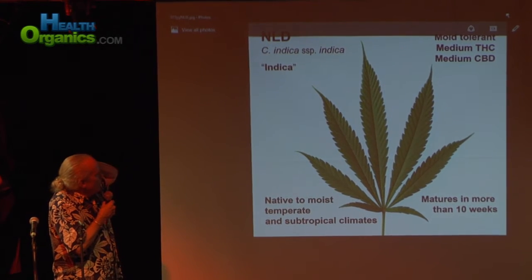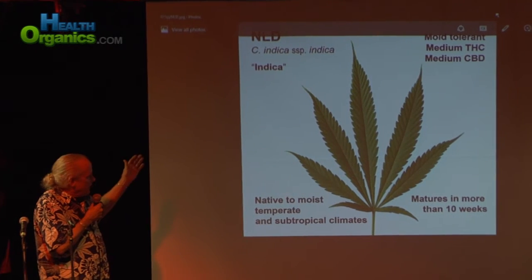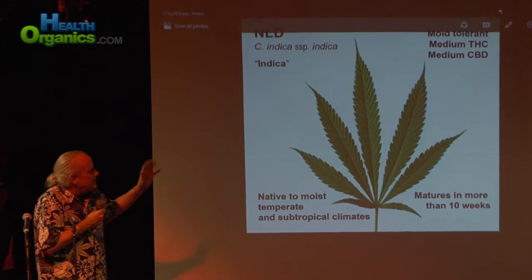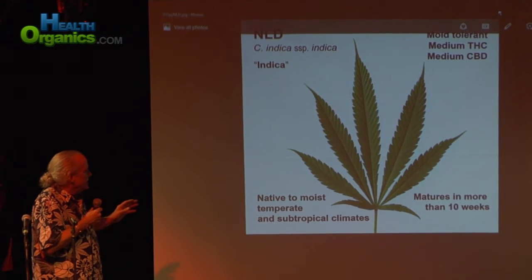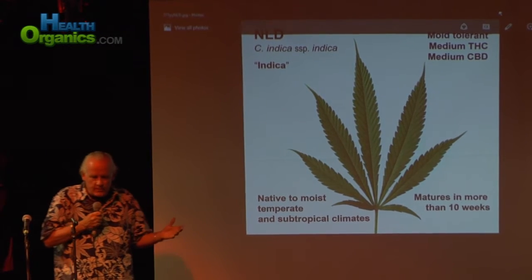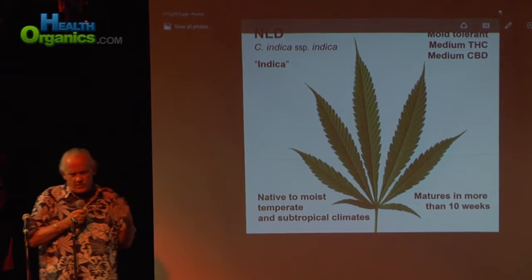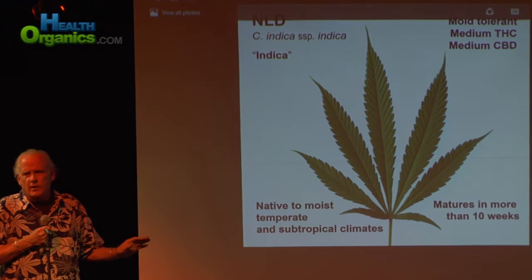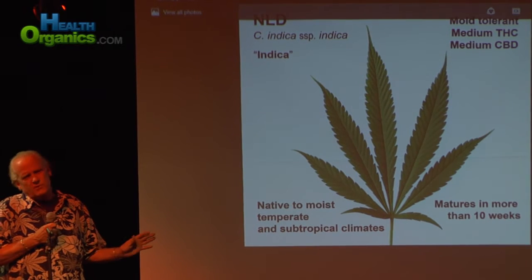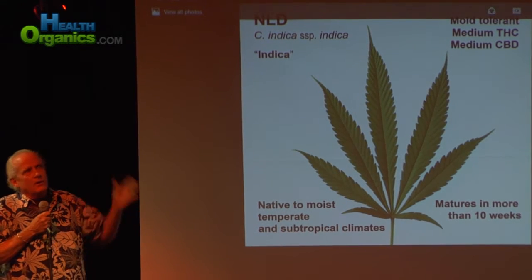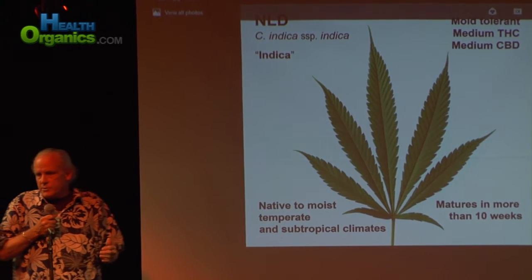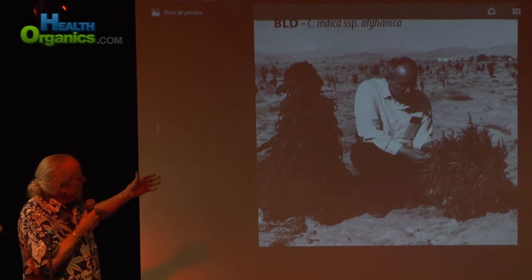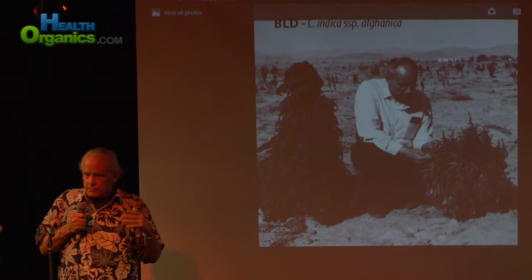The narrow-leaf drug varieties — originally called Indica — are more mold tolerant, with medium THC and CBD levels on average. They're native to more tropical, equatorial climates, and they usually take more than ten weeks to mature, which was a problem for a lot of growers. Ten weeks is a long time in the face of helicopters and lighting bills — these just got left out.